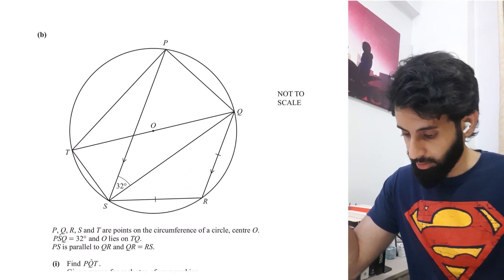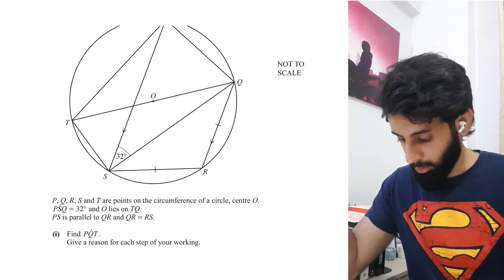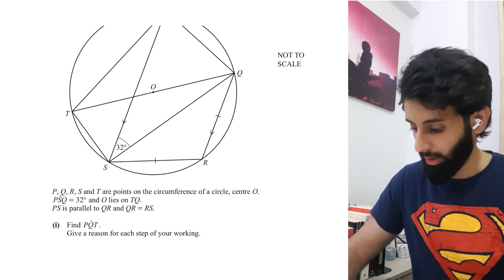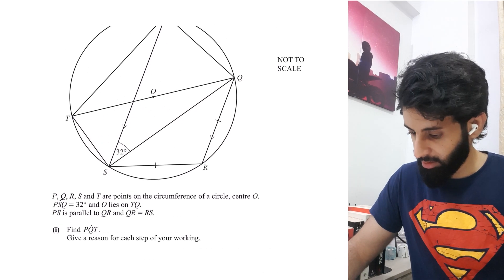PQ equals 32. And O lies on TQ. PS is parallel to QR, and QR equals QS. Find PQT. Give a reason for each step of your working. This is three marks. So let's have a look at PQT - it's this angle.